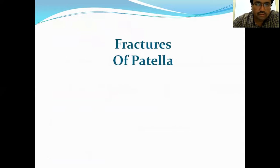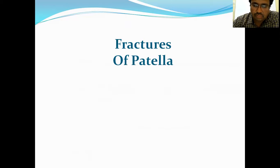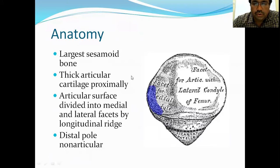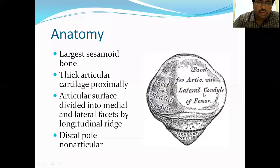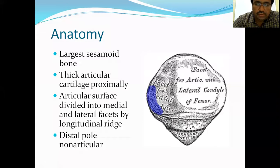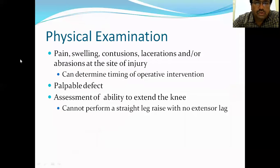Next, patella fractures. The patella is the largest sesamoid bone in the body. There are two facet joints — medial and lateral — separated by a longitudinal ridge. The distal pole is non-articular, while the two facet joints are articular surfaces. The patella is important for extension and flexion of the knee. Whenever there is a fracture of the patella, the patient complains of pain and swelling at the knee joint.